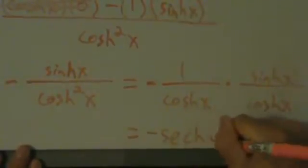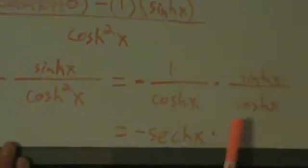Now notice negative 1 over cosh, that's negative hyperbolic secant. And then here, sinh over cosh is just tanh or hyperbolic tangent of x. That pretty much completes the proof of the derivative of the hyperbolic secant function there.